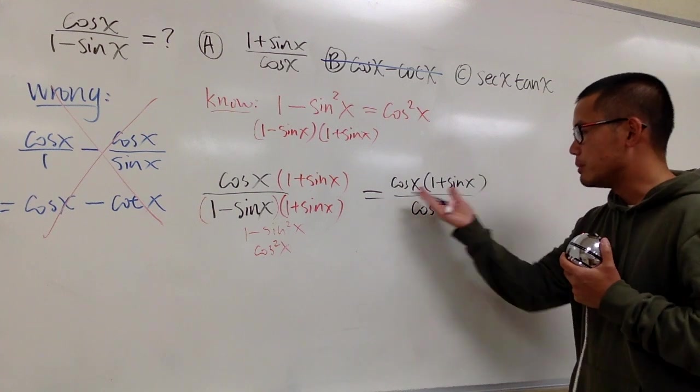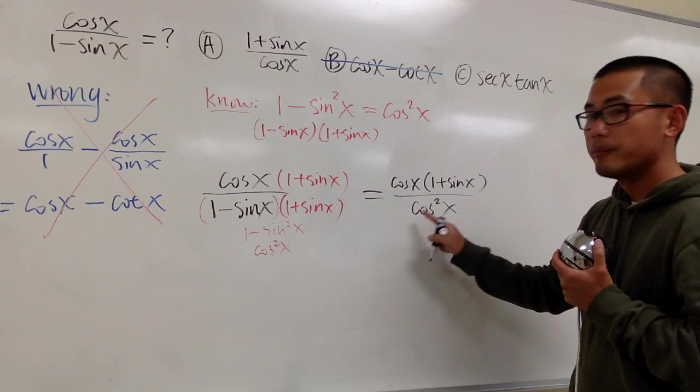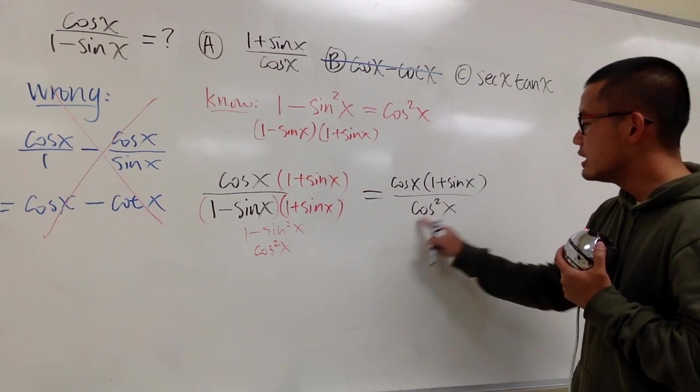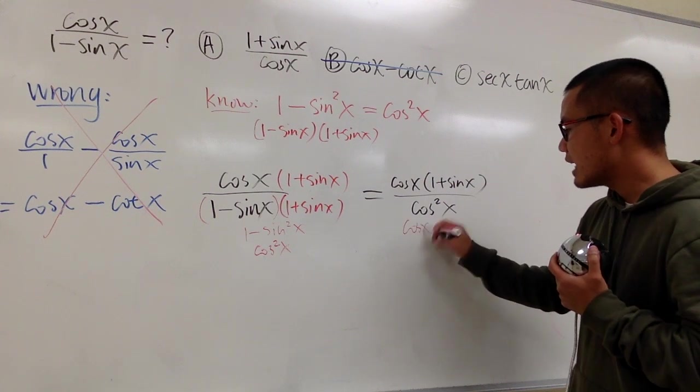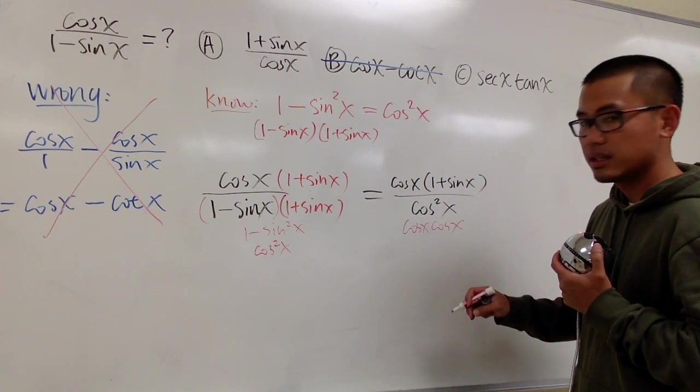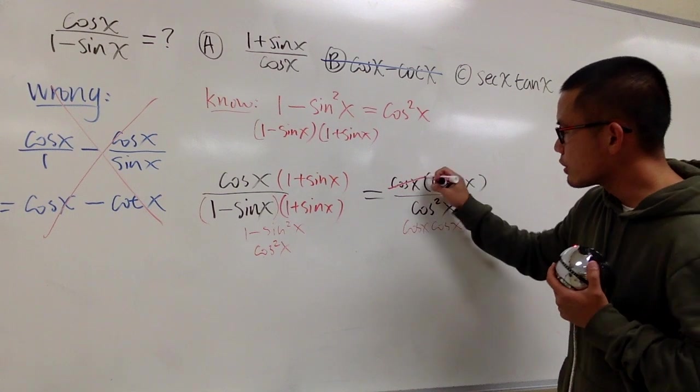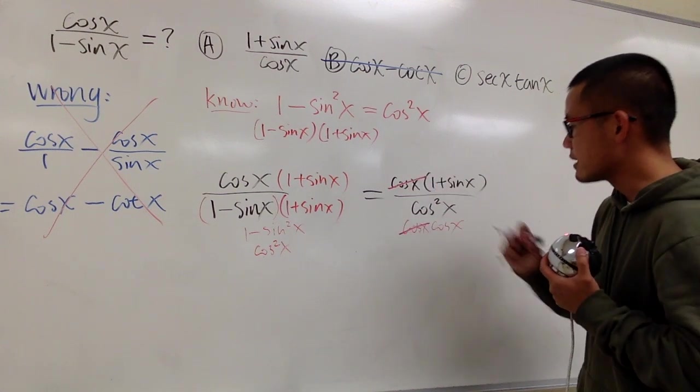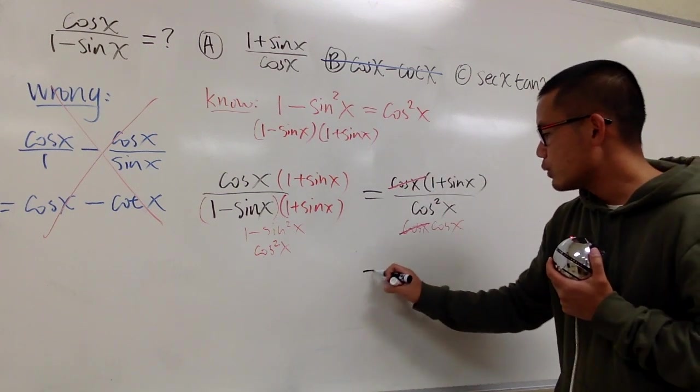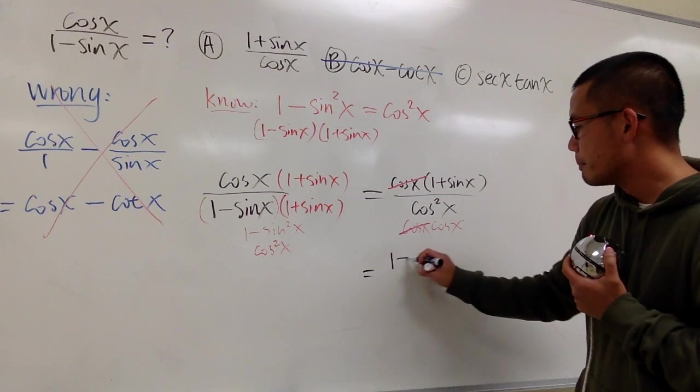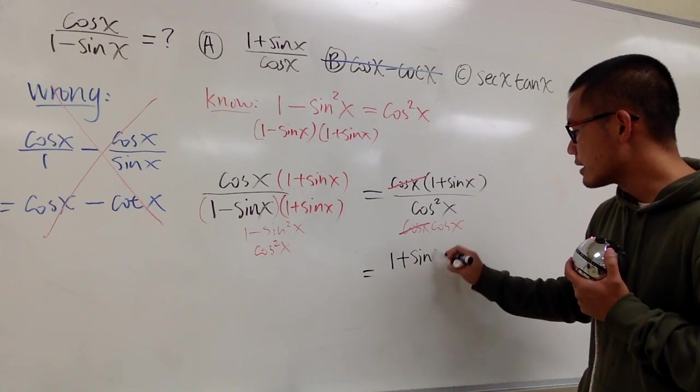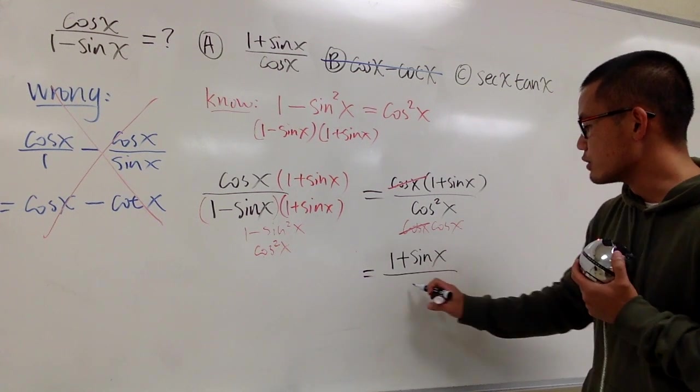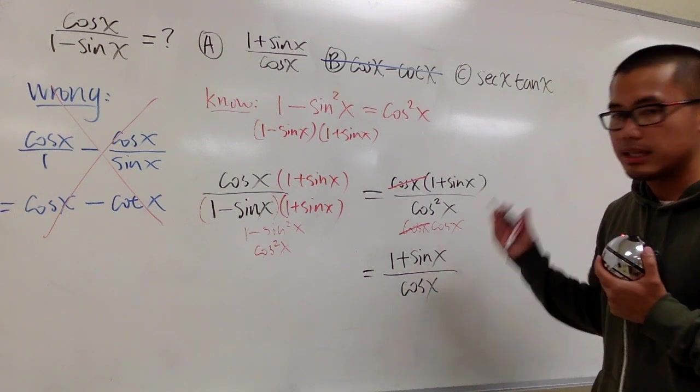And the reason for me to keep it this way is because, remember, this means cosine x times cosine x. We can cancel out this cosine x with one of the cosine x on the bottom. So in another word, we will just have 1 plus sine x on the top, all over cosine x, like this.